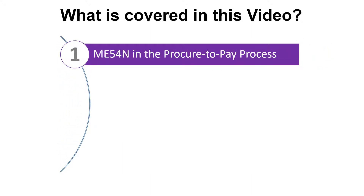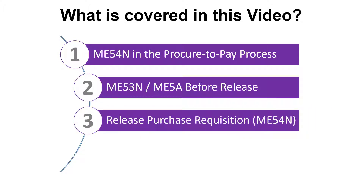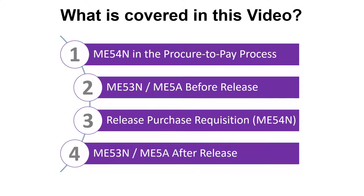We'll start by confirming where transaction code ME54N fits in the Procure2Pay process. Before releasing the purchase requisition, we'll review the status of the purchase requisition using transaction ME53N, Display Purchase Requisition, and transaction ME5A, Purchase Requisition List Display. We'll then release the purchase requisition using transaction ME54N, and finally review the updated status using both ME53N and ME5A.